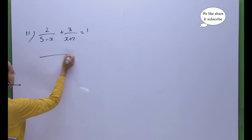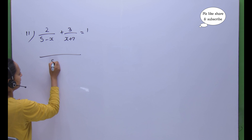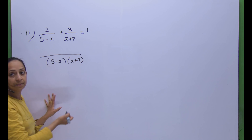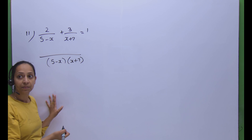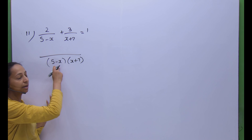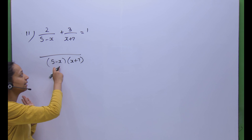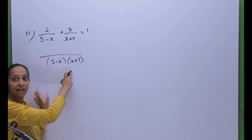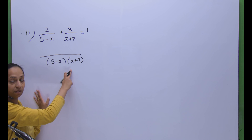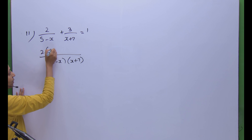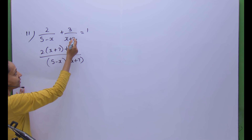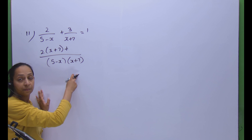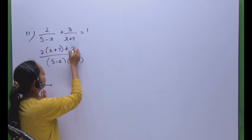When doing the quotient, we can write (5 minus x) and (x plus 7) as they are. When we divide, (5 minus x) cancels out, so we multiply 2 directly with (x plus 7), giving 2x plus 14. Put the plus sign, and the (x plus 7) terms cancel each other out.